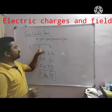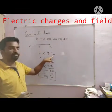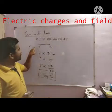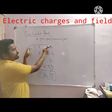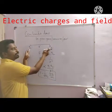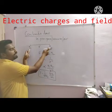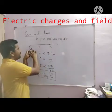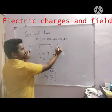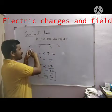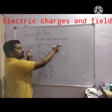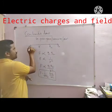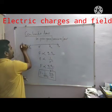The force between two point charges is directly proportional to the product of the charges and inversely proportional to the square of the distance between them. The direction of the force is along the line joining the two charges. If Q1 is positive and Q2 is also positive, this positive charge repels the other, so the force F12 — the force exerted by Q1 on Q2 — is in the repulsive direction. Similarly, Q2 repels Q1, so the force F21 is in the opposite direction.